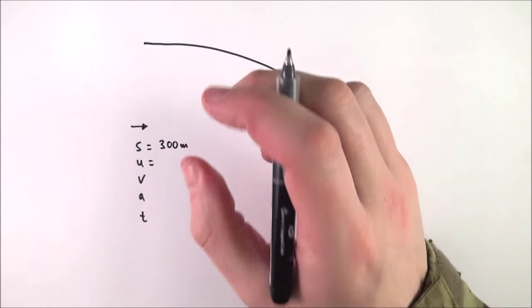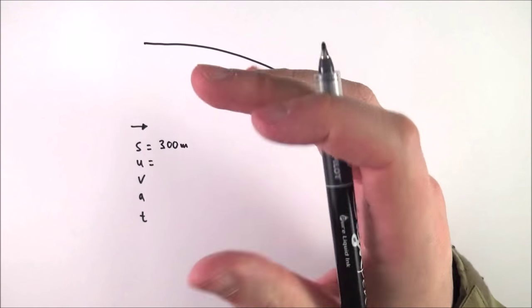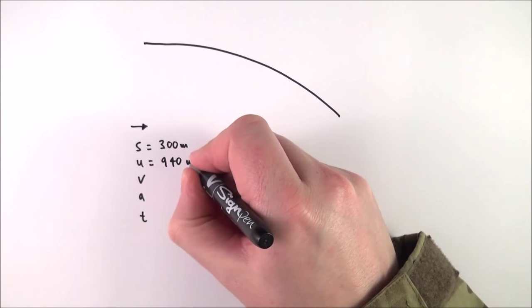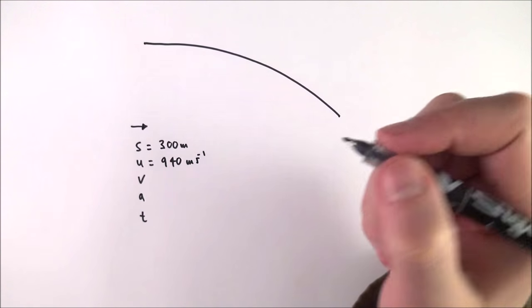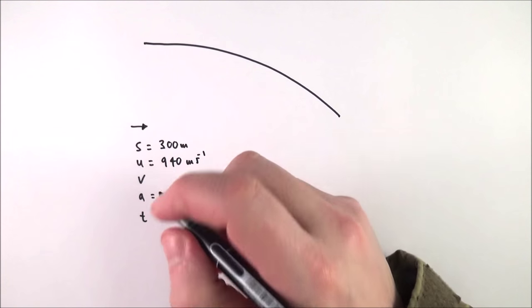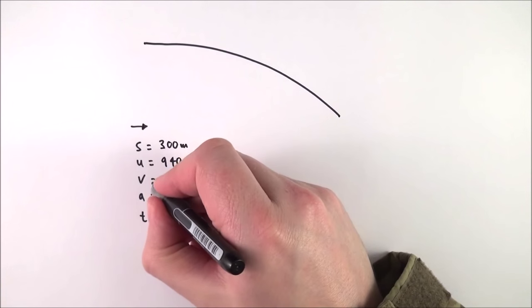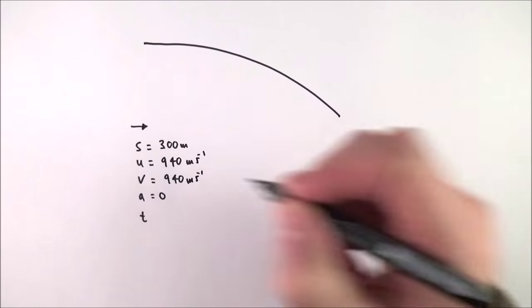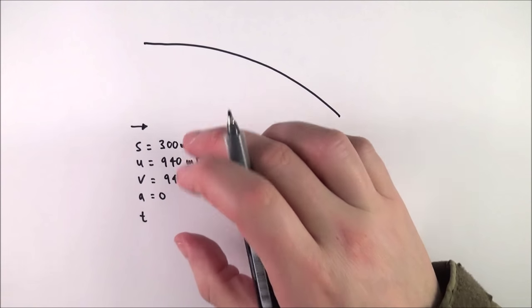What's the initial velocity of that round? Well the muzzle velocity of an SA80 is approximately 940 meters per second, and what I'm going to assume is that the acceleration is zero, like no air resistance, and therefore the final velocity is also 940 meters per second.